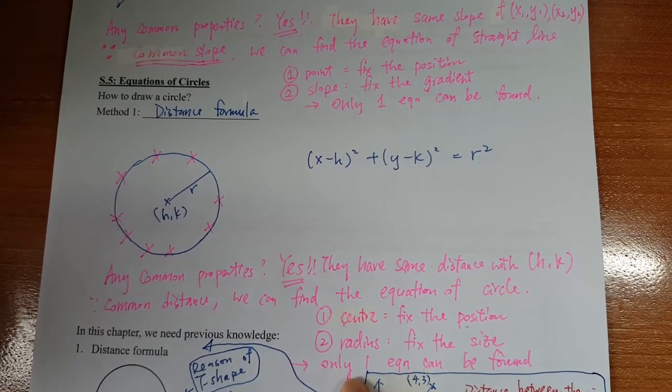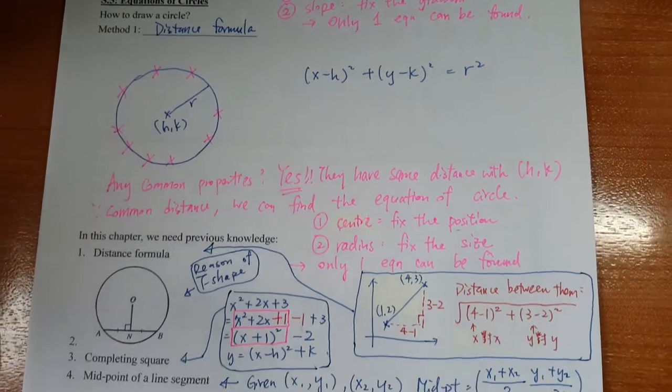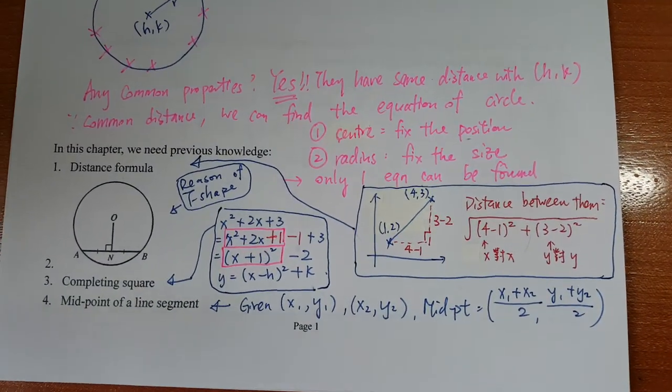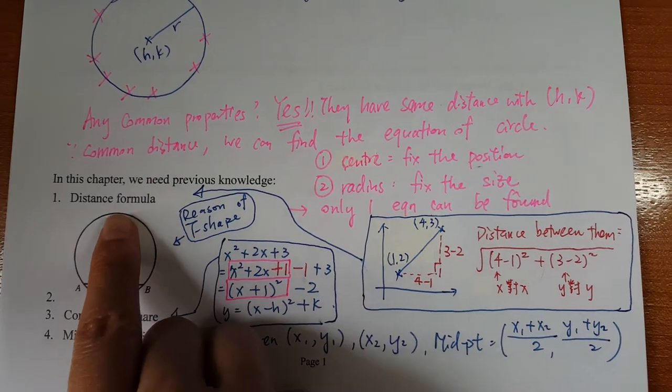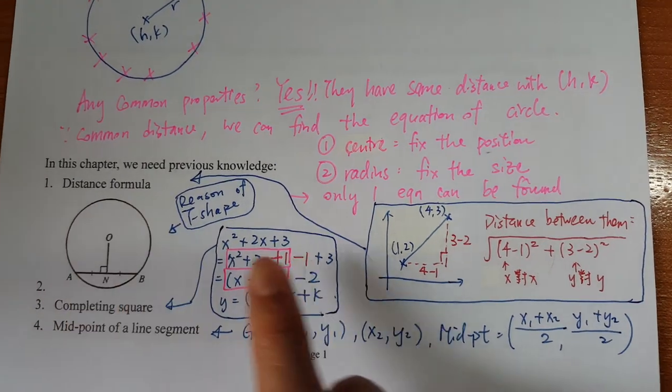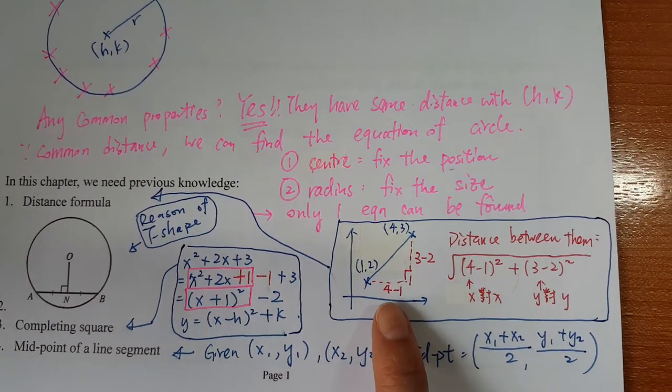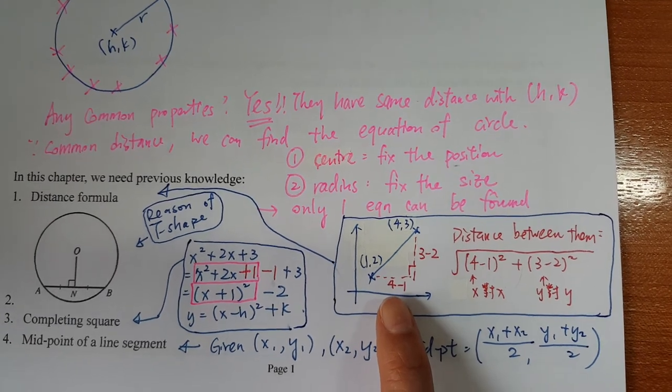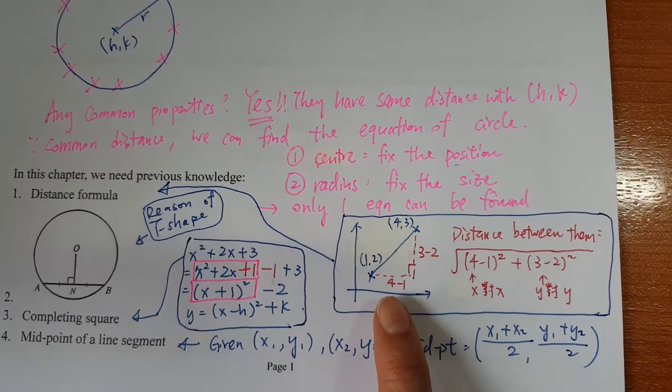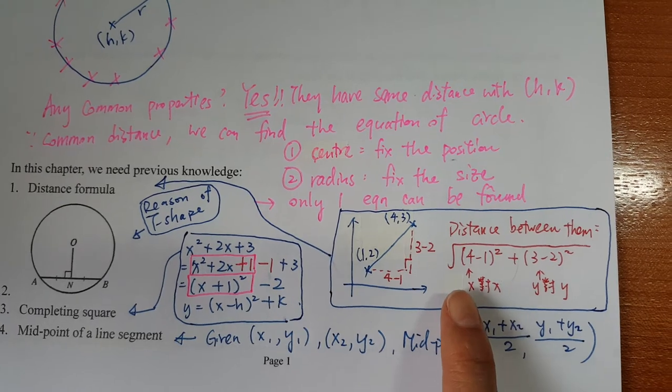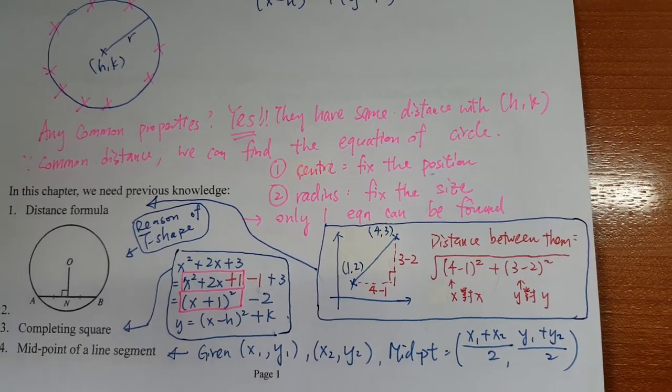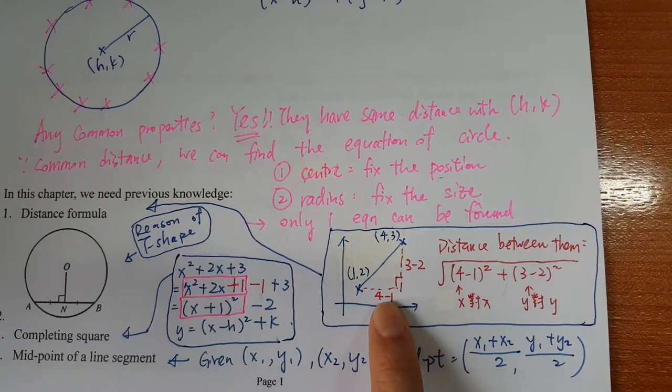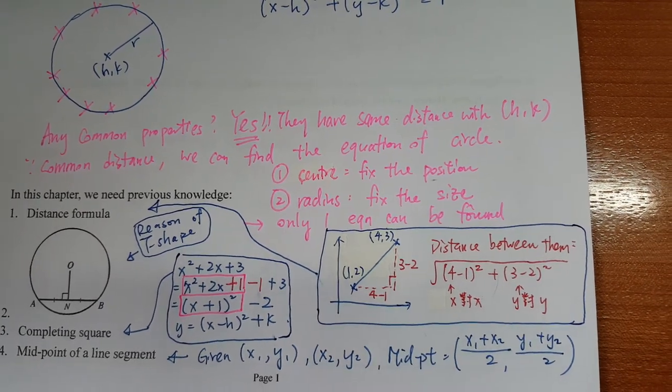And then we look at some previous knowledge that may be used. For the first one is the distance formula. I'm not sure whether you remember it or not—it's in form three, so I write it in a more clear way. This one actually is using the Pythagorean theorem, because the distance formula from Pythagorean theorem.